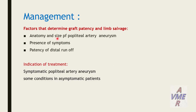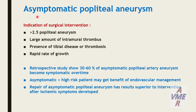What are the management factors that determine graft patency and limb salvage? Anatomy and size of the popliteal artery aneurysm, presence of symptoms, patency of the outflow. Indications for treatment: symptomatic popliteal artery aneurysm and some conditions in asymptomatic patients. For asymptomatic popliteal artery aneurysm, indications for surgical intervention include: aneurysmal size more than 2.5 cm, large amount of intramural thrombus, presence of TBL thrombosis, and rapid rate of growth.